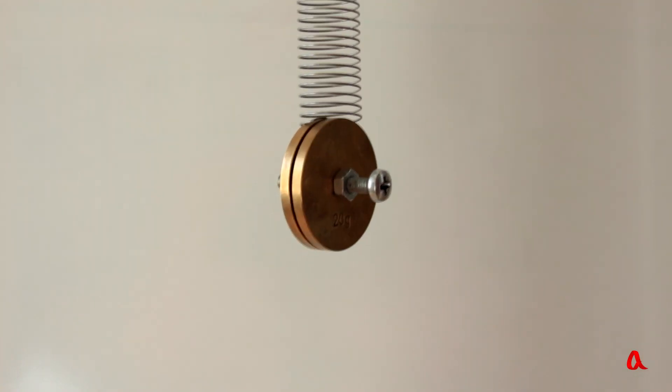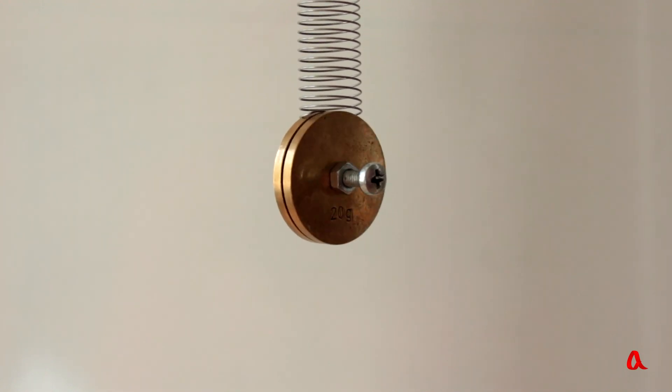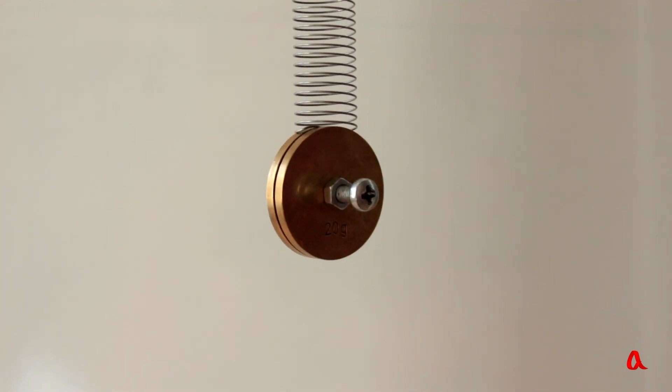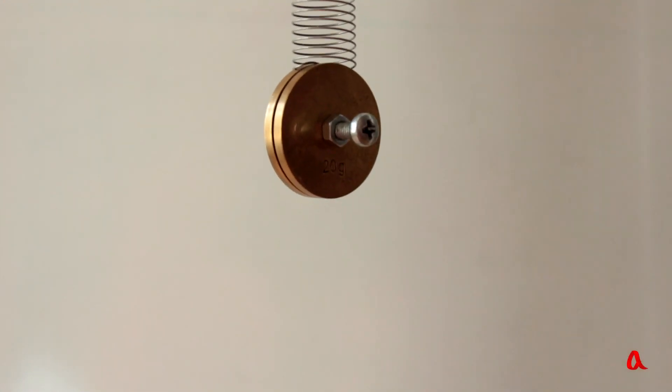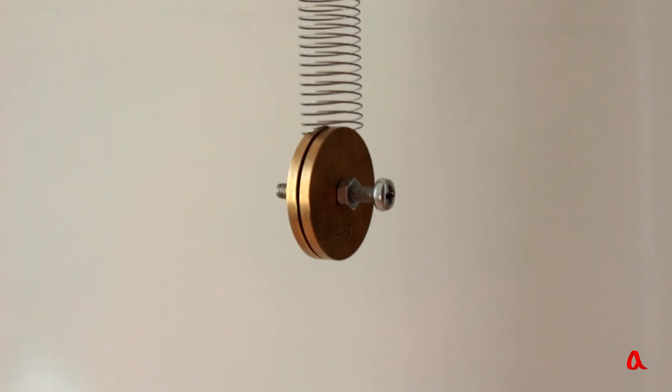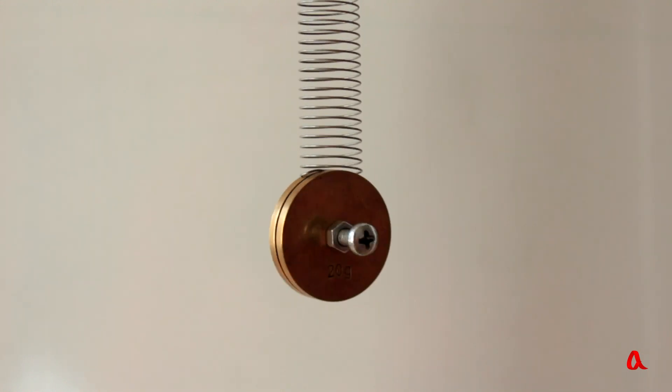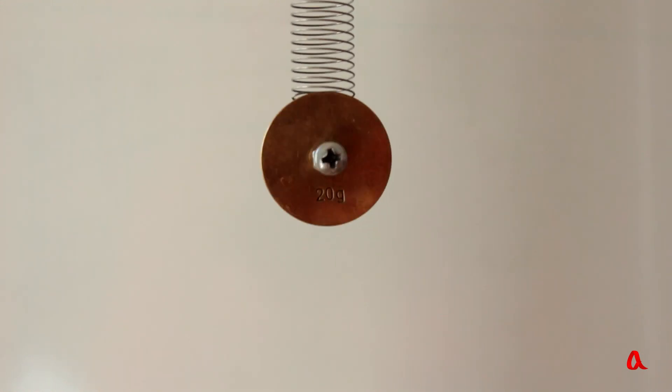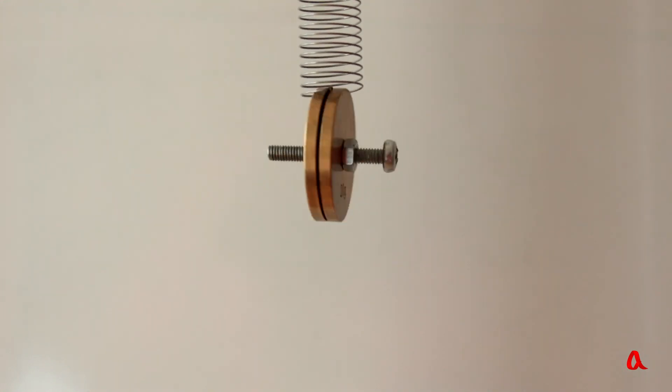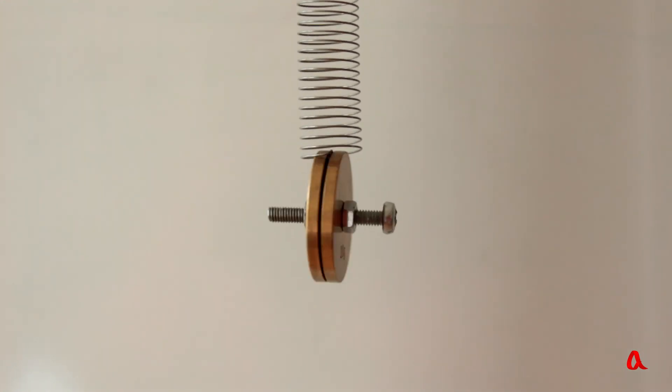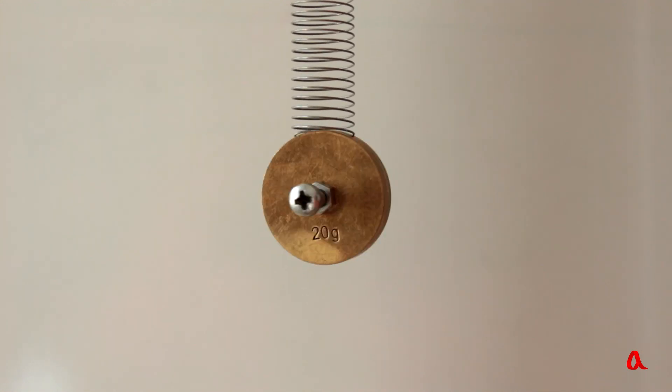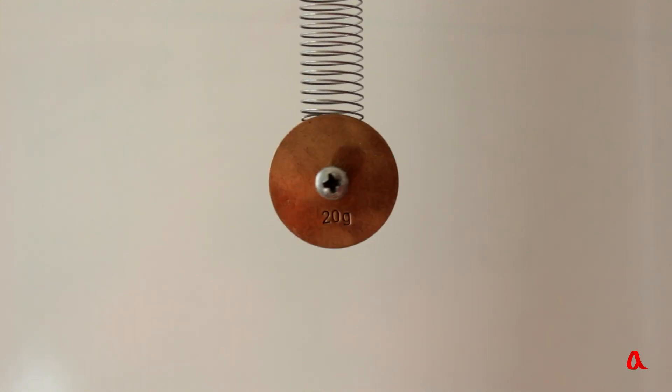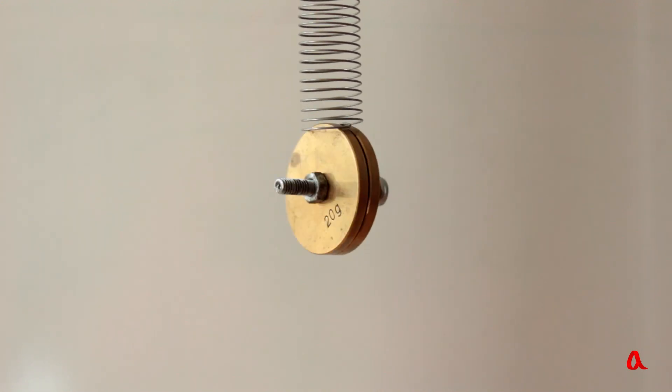But that's not all. The fact is that due to the spiral shape of the spring, vertical and rotational oscillations are connected. Let's assume that we started only vertical oscillations. When the load goes down, the spring gets stretched, and because of this unwinds, and when the load goes up, the spring contracts and winds back. Due to this, the energy of vertical oscillations is gradually transformed into the energy of rotational oscillations.